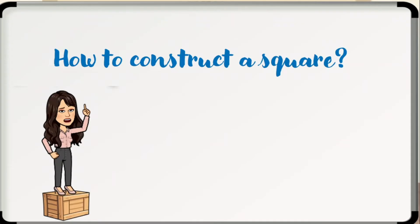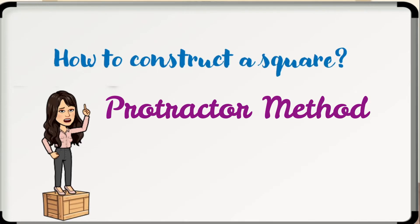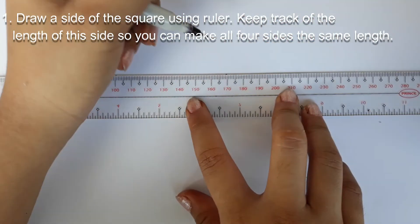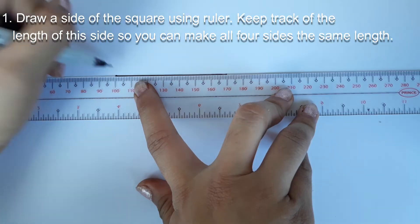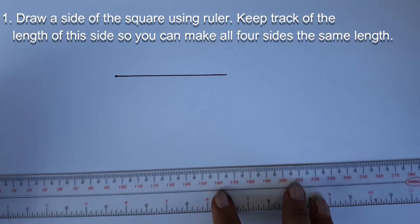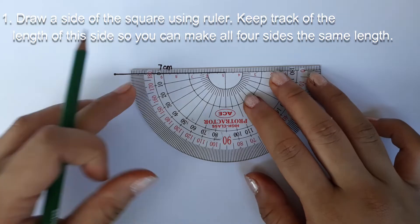How to construct a square? A square is a quadrilateral with four right angles and four congruent sides. Learning to draw a perfect square using either a protractor or compass is a useful skill. First, we will do it using the protractor method. Step 1. Draw a side of the square using ruler. Keep track of the length of this side so you can make all four sides the same length.